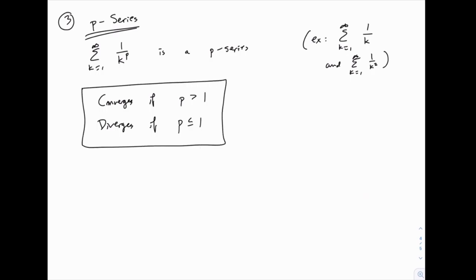That's all you need to know. If you look at the examples that we've already seen, in the first example, 1 over k, where p equals 1, that's the second case where p is less than or equal to 1, and it diverges.